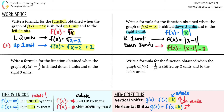Write a formula for the function obtained when the graph of f(x) equals 1 over x is shifted down four units and to the right three units. I like to work left and right first, then ups and downs. We've got a right shift of three units and a down shift of four units. The original function was f(x) equals 1 over x.